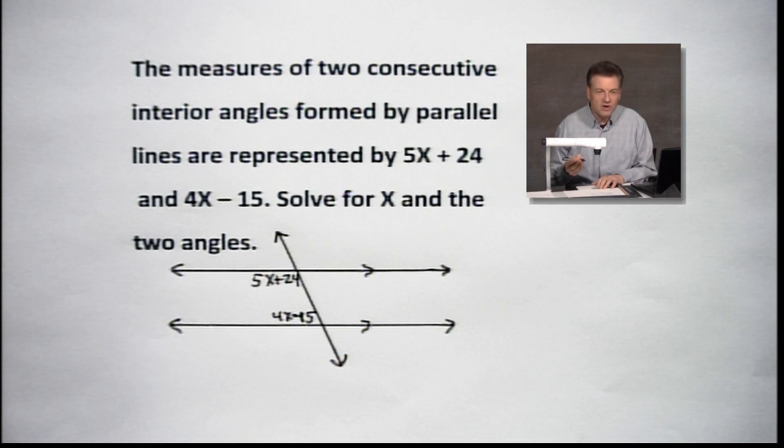I'm going to take a guess that we have 5x + 24 as maybe the bigger one, and 4x - 15, just because if x is any kind of positive value, which it would have to be to make this work. They sure don't look congruent. They have to be either congruent or supplementary. So this is the case where we have the two angles that are going to add up - their measures are going to add up to 180. They are supplementary.